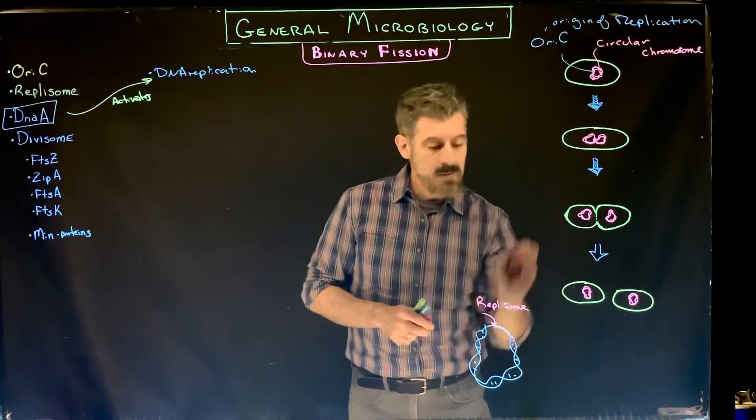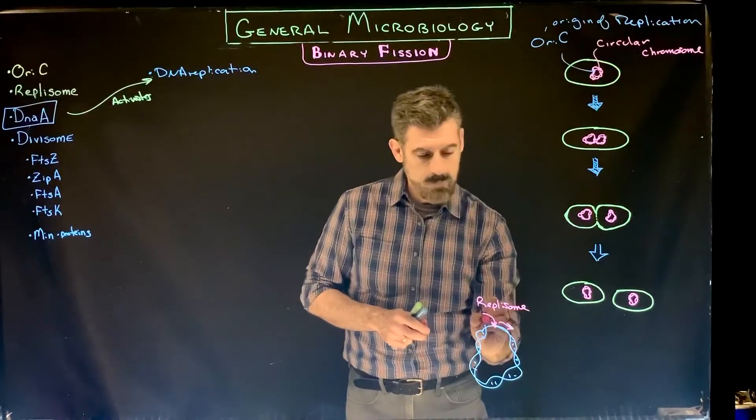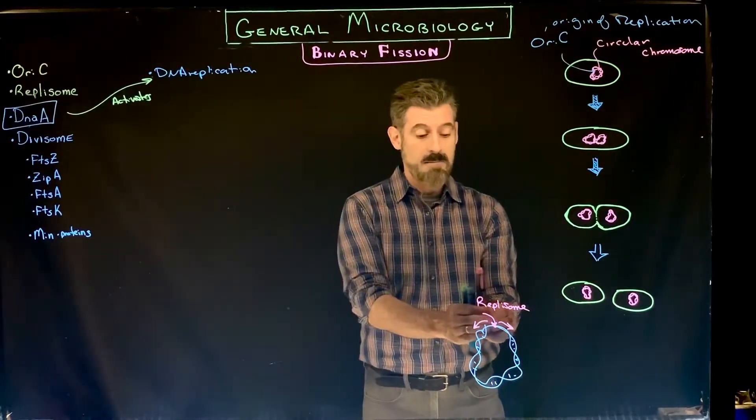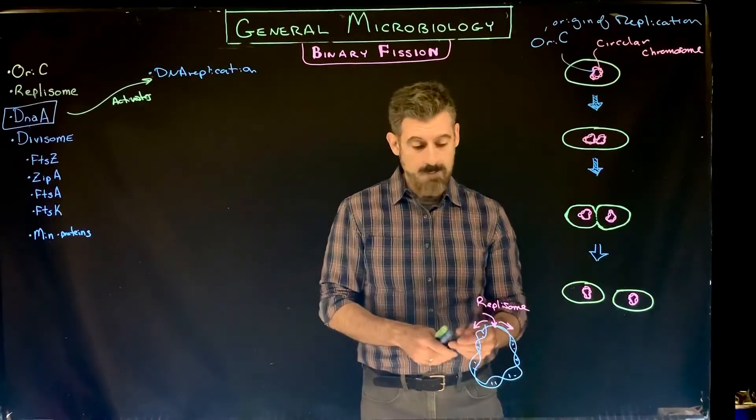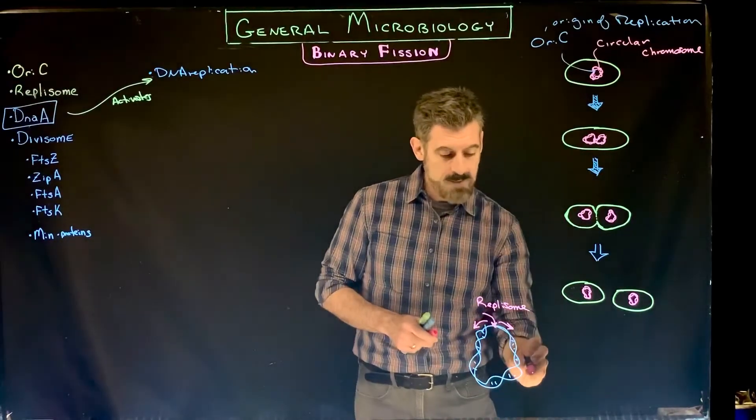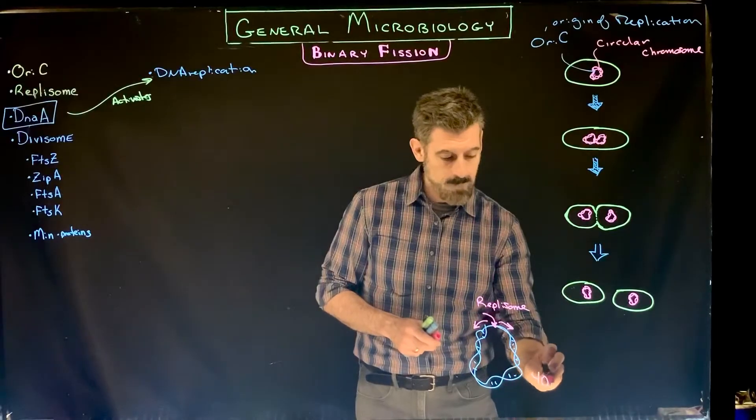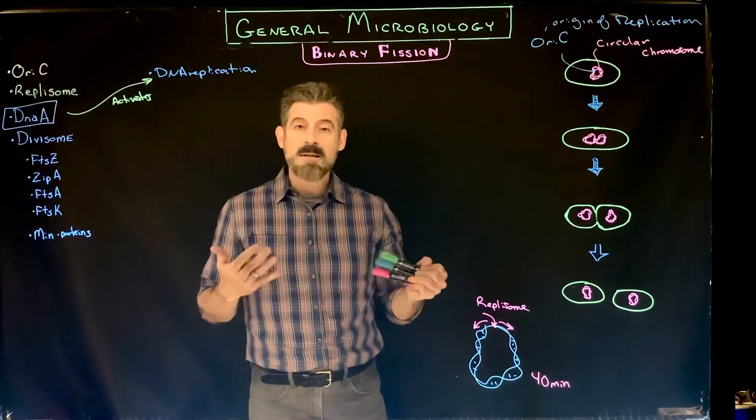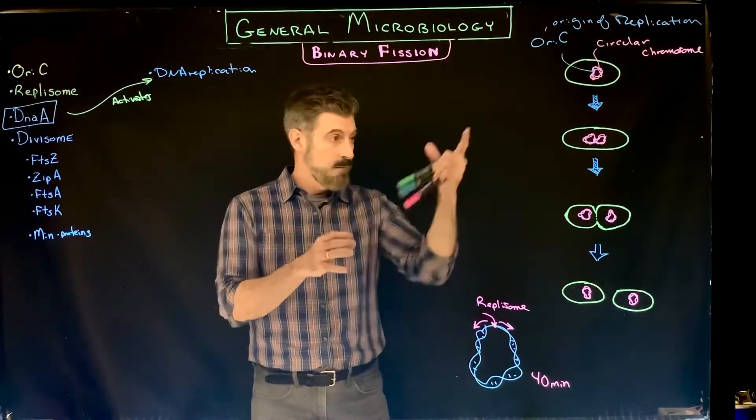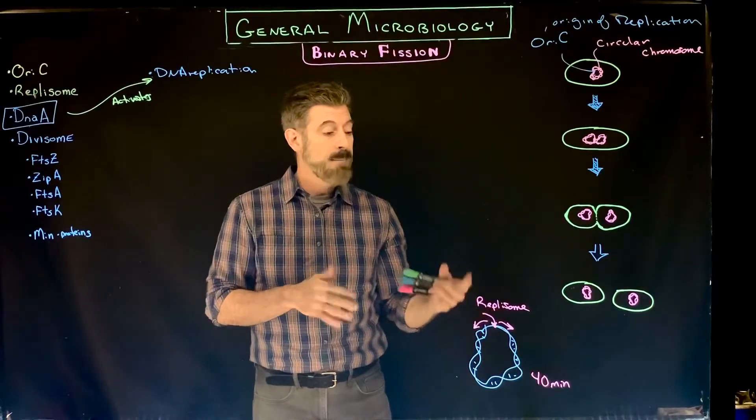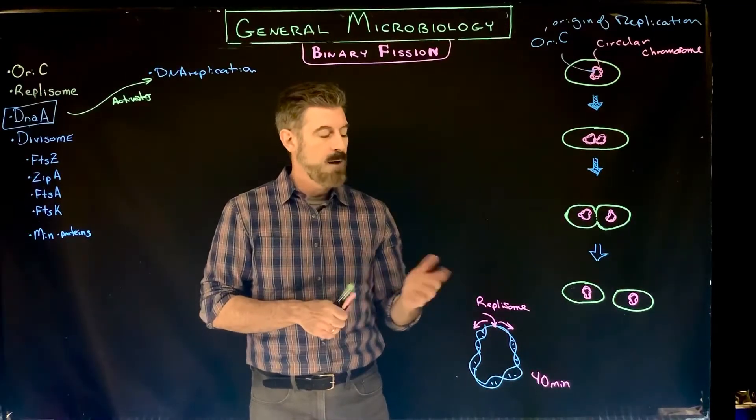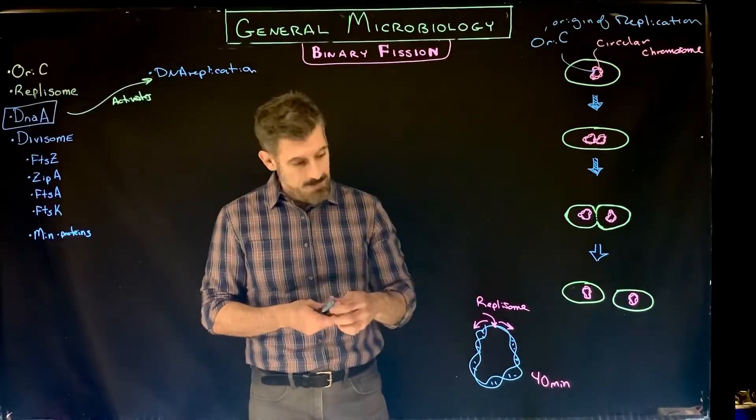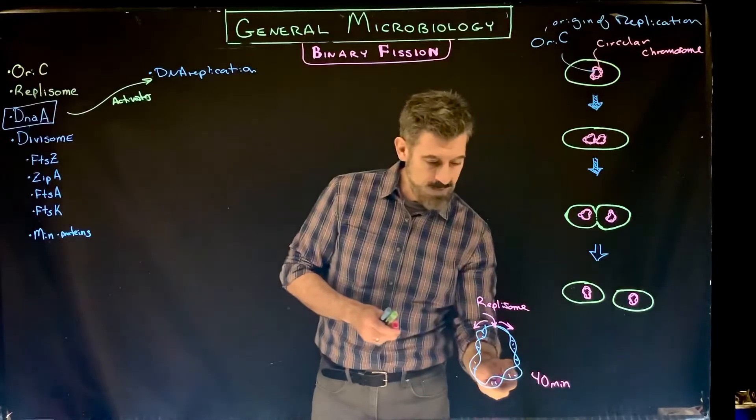From that origin of replication, it can be bi-directional, meaning that replication can occur in both directions at the same time, which speeds things up. Usually this takes about 40 minutes in general in bacterial cells, although some cells, some species like E. coli, can have the actual cell division, the binary fission process, happen once every 20 minutes. How is that even possible if it takes 40 minutes to replicate the DNA?